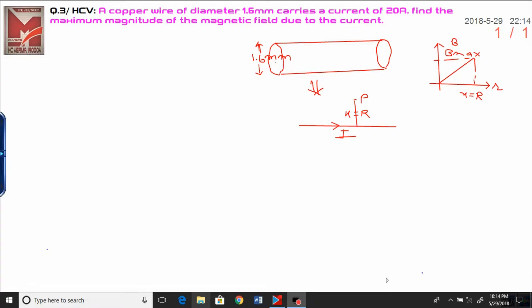Dear student, this is question number 3 from H.C. Verma from the chapter Magnetic Field. In this question, a little bit of a trick you can learn. A copper wire of diameter 1.6 mm carries a current of 20 ampere. Find the maximum magnitude of the magnetic field due to the current.